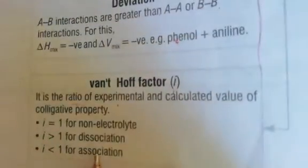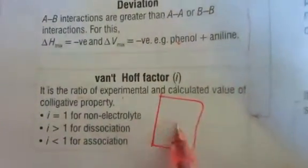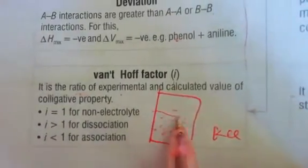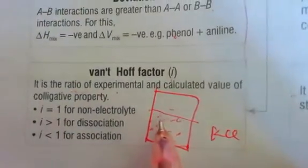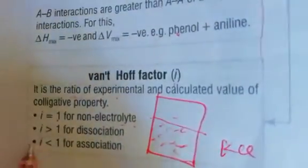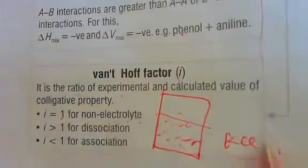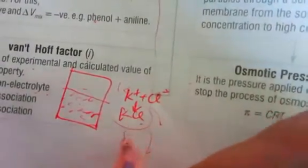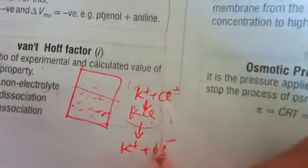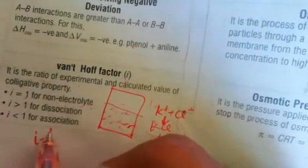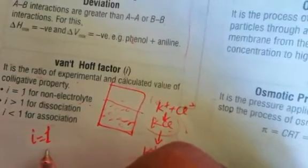It is related to association and dissociation. For example, take KCl. After dissociation or association, we examine what happens. If i = 1, it is a non-electrolytic solution. If i > 1, dissociation is occurring. If i < 1, association is occurring.